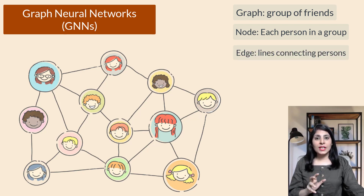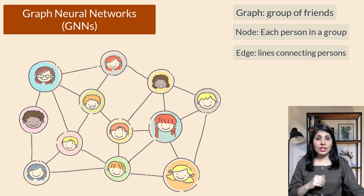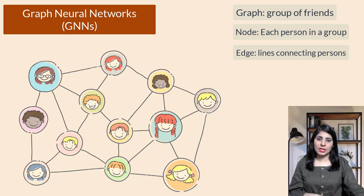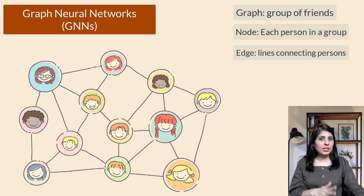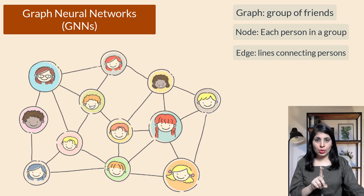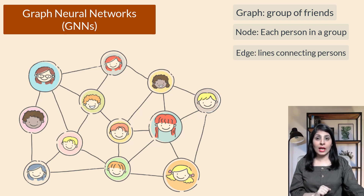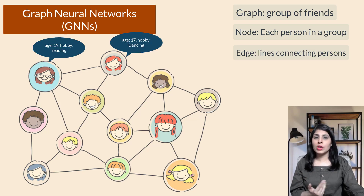GNNs are like a brain that can understand and analyze this group of friends. They can look at each person and their connections to make predictions or understand how the group interacts. Each person, meaning each node, has some information about themselves like their age, hobby, or interest — this information is called features.